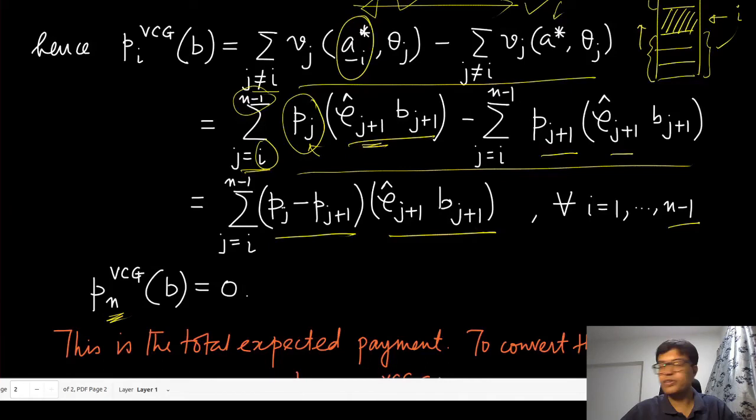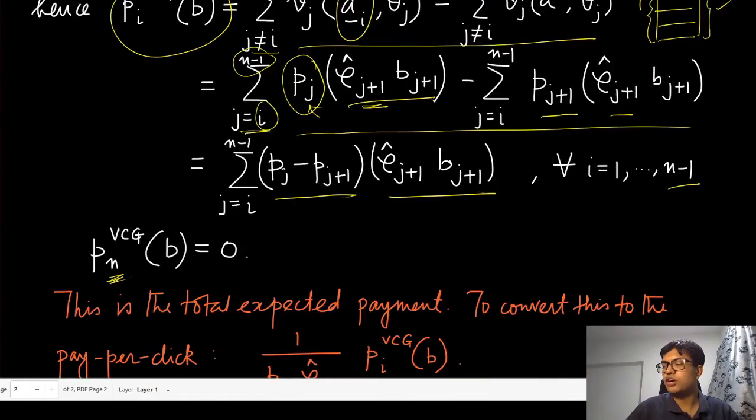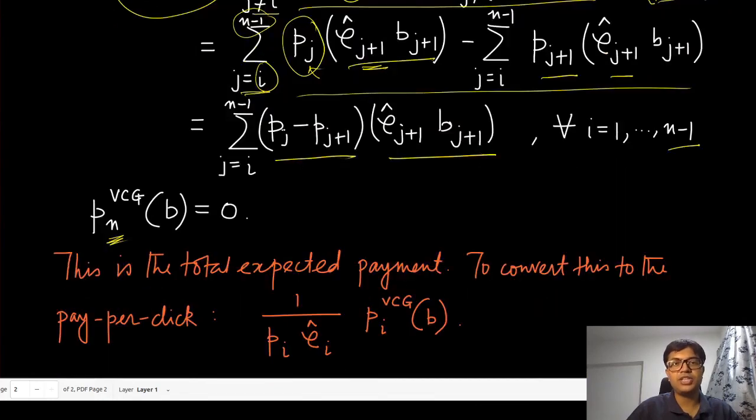This is the total expected payment. You can think of this as after observing that they have been clicked or not. This click is essentially a probabilistic event.